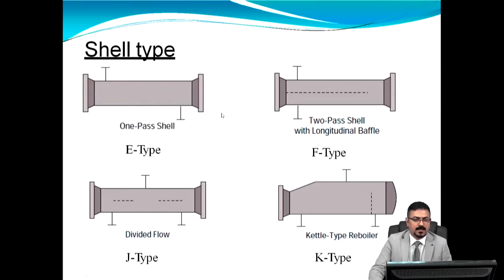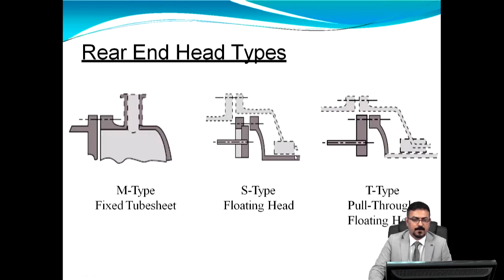Shell types include one-pass shell, two-pass shell, divided flow, and kettle type reboiler. For rear end head types, we have M-type fixed tube sheet, S-type floating head, and T-type pull-through floating head.